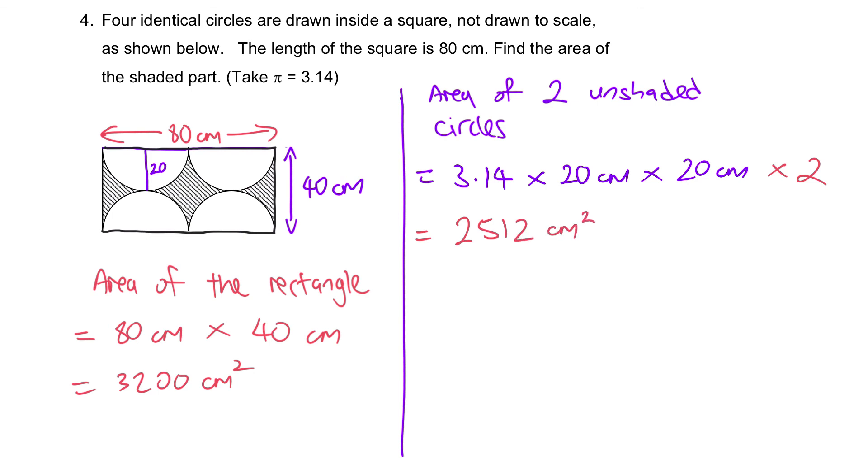Final step. Area of the shaded part. Which is the area of the entire rectangle minus away the four unshaded semicircles or two unshaded circles, they are the same. Therefore, the answer is 3200 minus 2512. The answer is 688 cm squared.